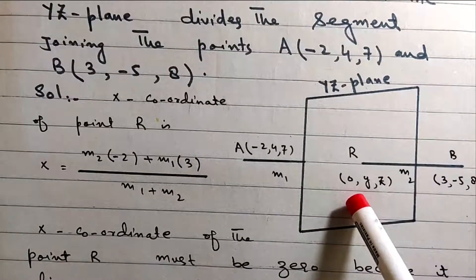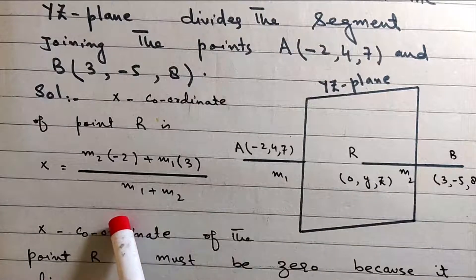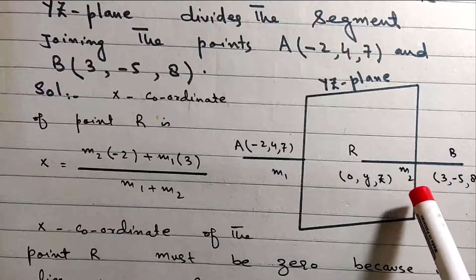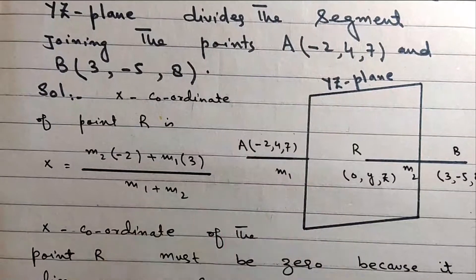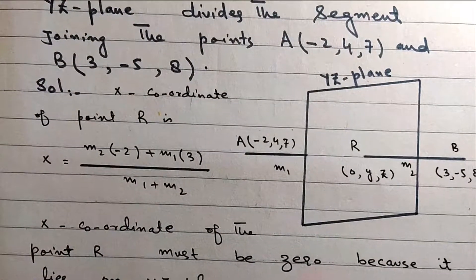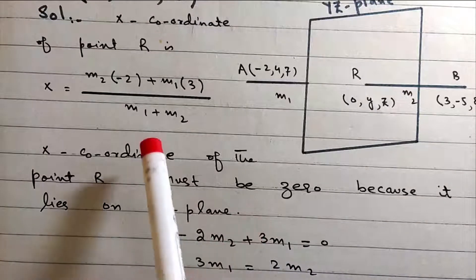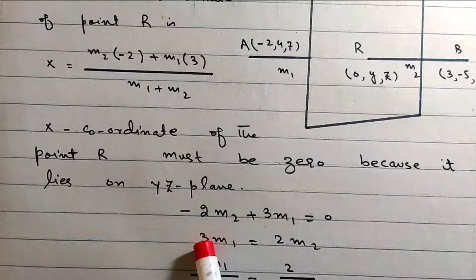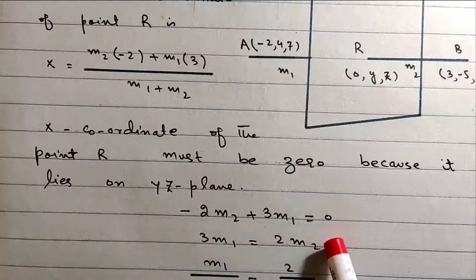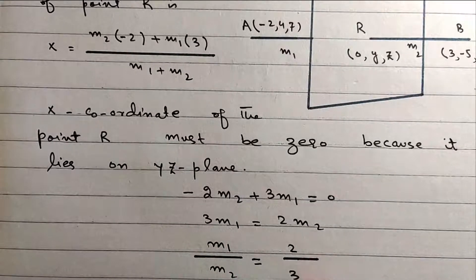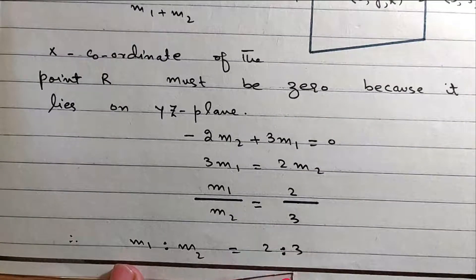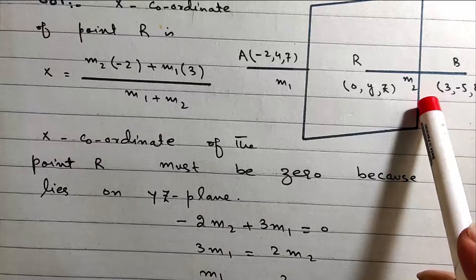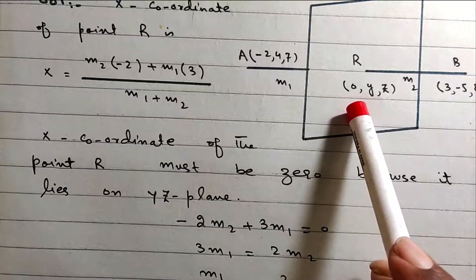You only need to find the x-component. The x-coordinate of point R: M2 multiplied by -2 plus M1 multiplied by 3, over M1 plus M2. Since the point lies on the YZ-plane, the x-coordinate must be zero. Setting it to zero and cross-multiplying: minus 2·M2 plus 3·M1 equals 0, so 2·M1 equals M2, giving M1:M2 equals 2:3.